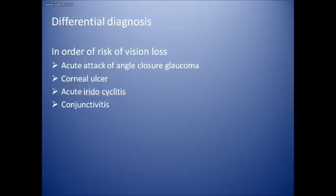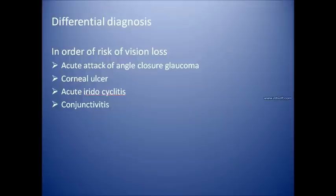The important differential diagnoses for red eye, listed in order of risk of vision loss, are: first, acute attack of angle closure glaucoma; second, corneal ulcer; third, acute iridocyclitis; and fourth, conjunctivitis. The risk of vision loss is maximum with acute angle closure glaucoma, while conjunctivitis does not per se cause loss of vision.